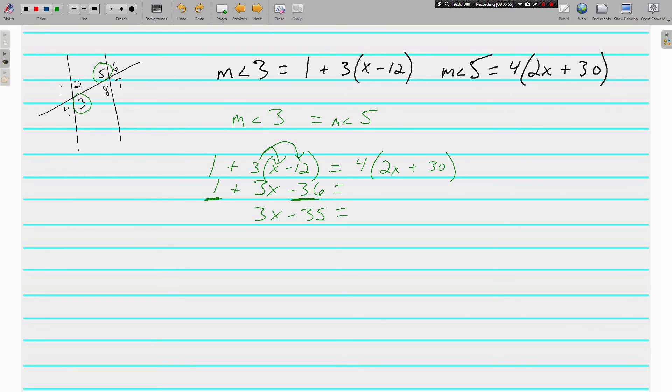On the right side, 4 times 2x is 8x. And 4 times 30 is 120. I'm just going to go ahead and bring that down to the next line. All right, now that each side is simplified, we're ready to do things to both sides.